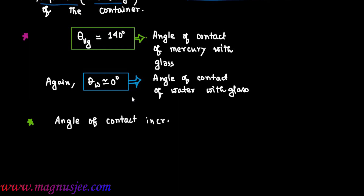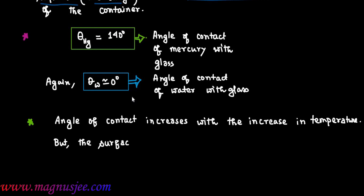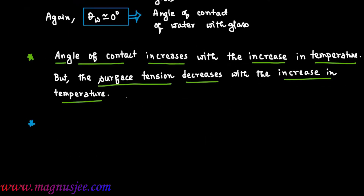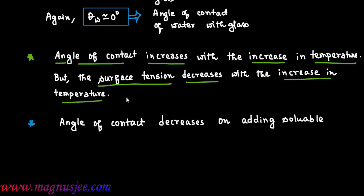As additional information: the angle of contact increases with an increase in temperature, but surface tension decreases with an increase in temperature. Also, the angle of contact decreases on adding a soluble impurity to the liquid.